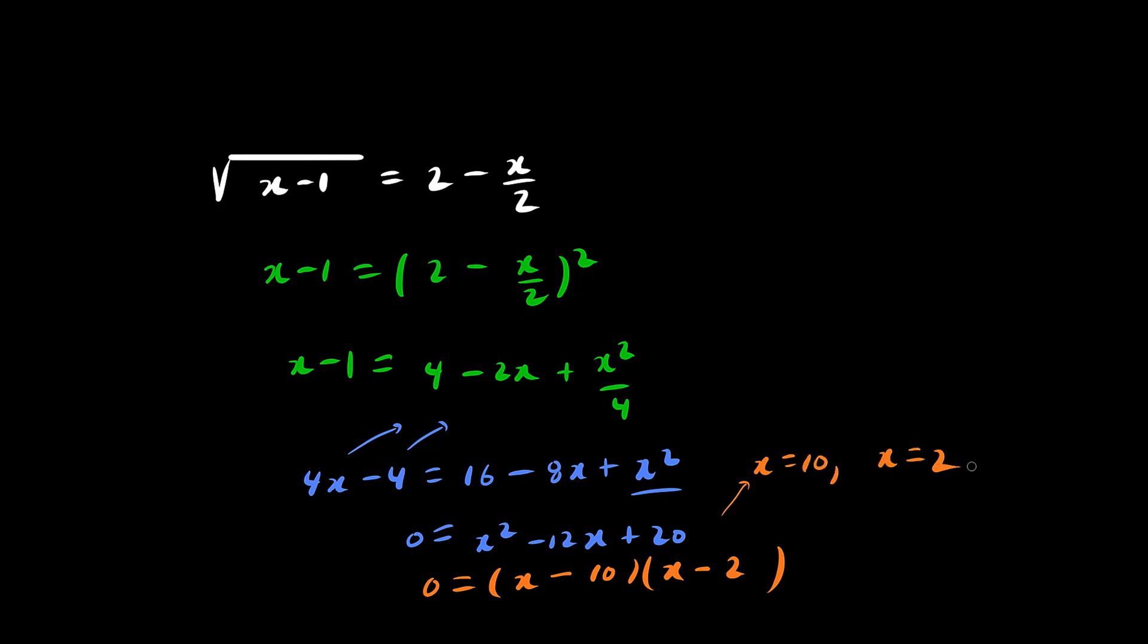Now we should check for extraneous roots. When x is 10, the left side is 10 minus 1 all square rooted, which is square root of 9, which is 3. And the right side, when x equals 10, equals 2 minus 10 over 2, which is 5, which is negative 3. So left side does not equal the right side, so we reject this.